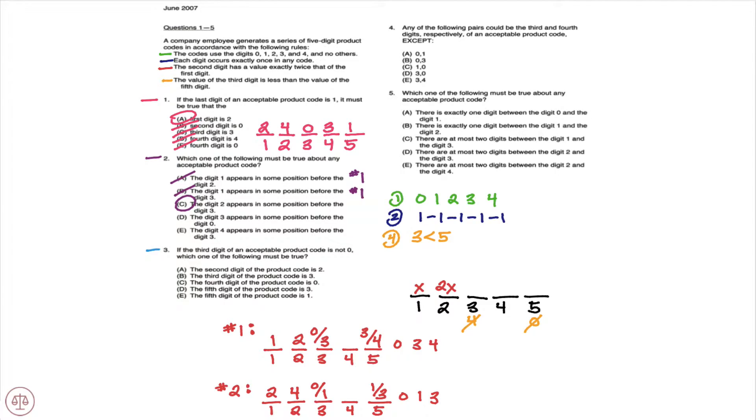Moving on to question number three. If the third digit of an acceptable product code is not zero, which one of the following must be true? Alright. So we have two possibilities here, and we're saying that the third digit is not zero.